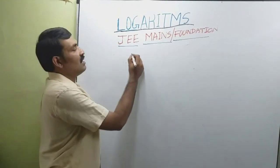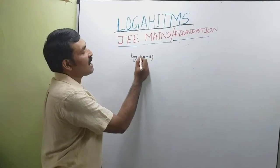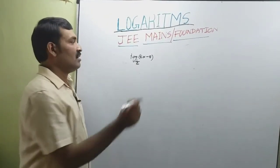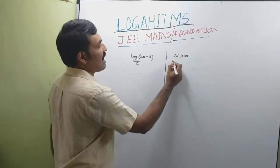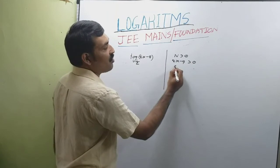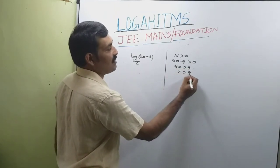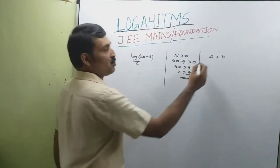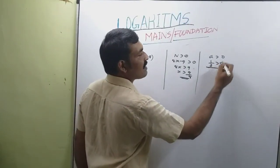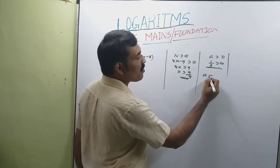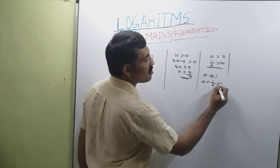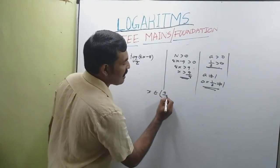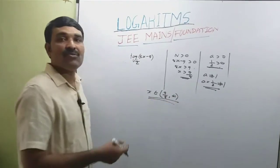Now consider log of (8x - 9) to the base 1/2. Find the value of x for which the function is defined. First condition: 8x - 9 > 0, so x > 9/8. The base is 1/2: 1/2 > 0 and 1/2 ≠ 1, so the second and third conditions are also satisfied. Therefore x belongs to the open interval (9/8, ∞).